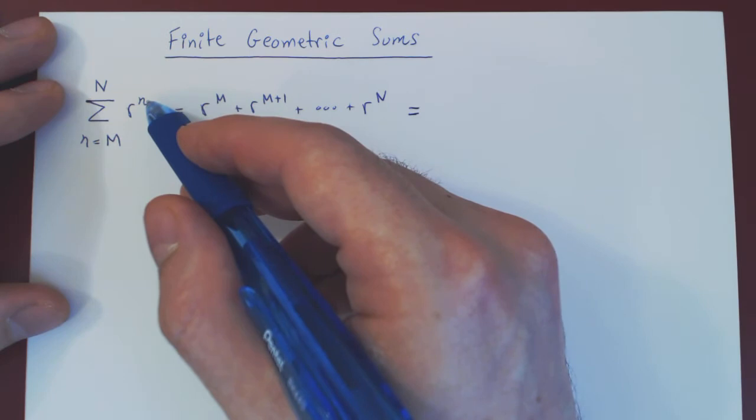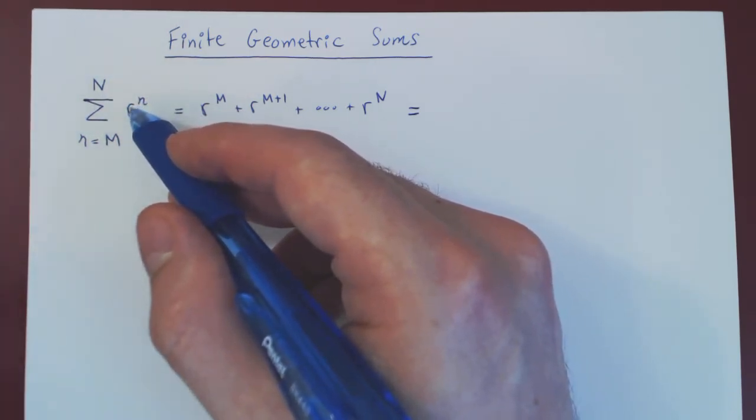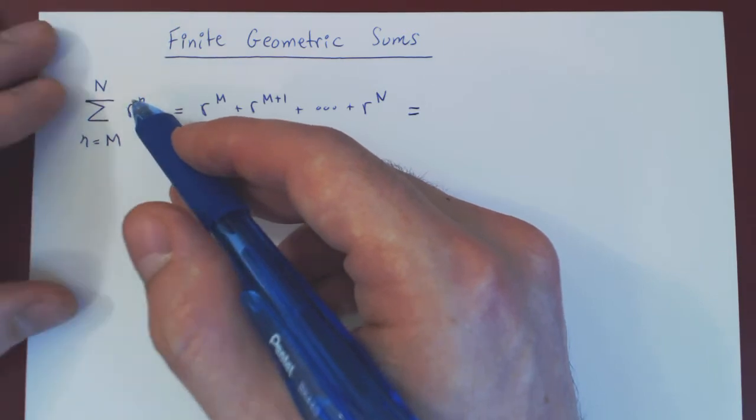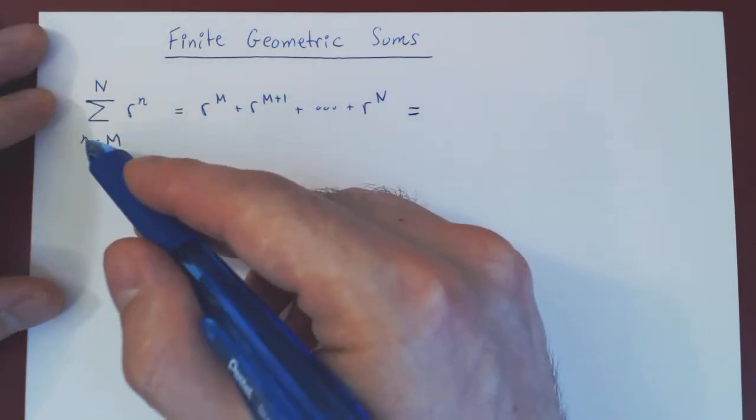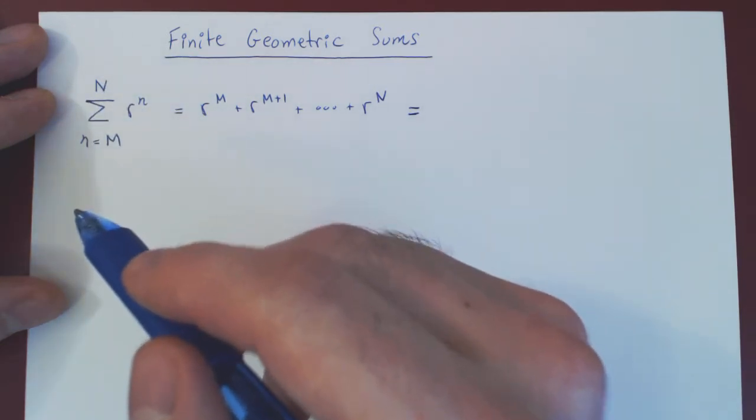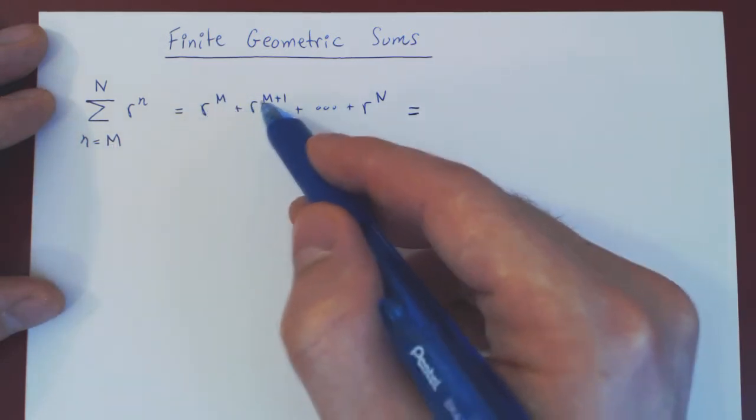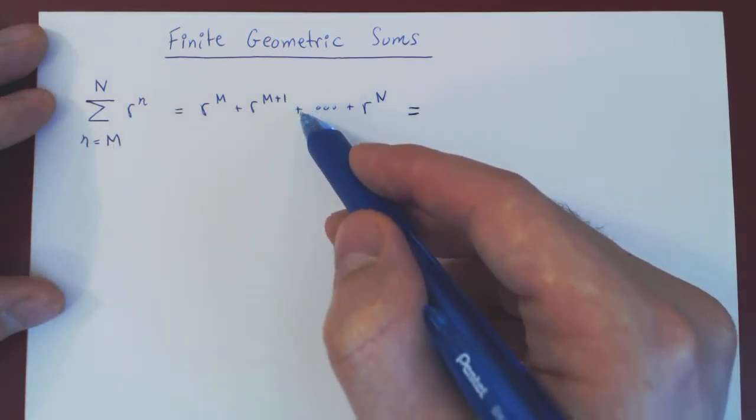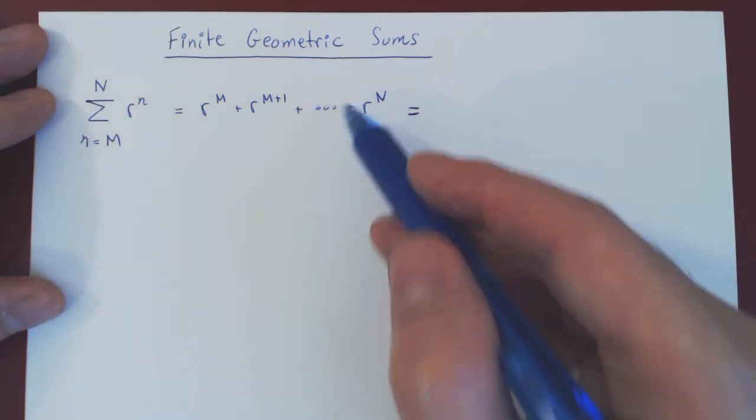When you're summing consecutive powers of a fixed number, you're not always dealing with an infinite sum with a series, but sometimes you're dealing with a simple finite sum. So n begins at a fixed starting point and ends at a fixed end point. So this would be r to the m plus r to the m plus 1 plus r to the m plus 2 all the way up to r to the uppercase N.